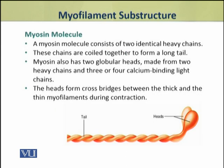A myosin molecule is a protein which consists of two identical heavy chains. They are coiled together and form a long tail. This tail is also formed of two heavy chains along with three or four calcium binding light chains.